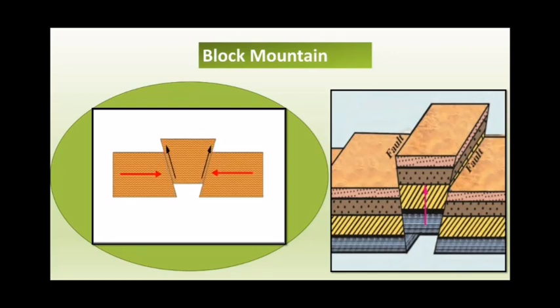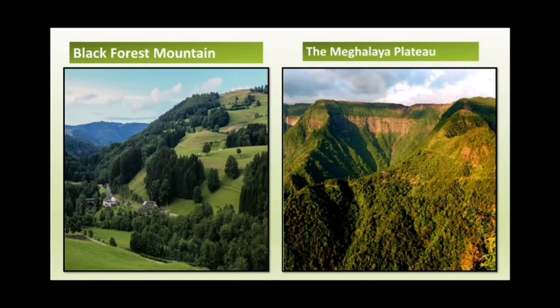Such landforms are called as block mountain. The top part of block mountains are flat. You can see this in the picture. The top part is flat and their slopes are steep. There are some examples of block mountain: the Black Forest Mountain in Europe and the Meghalaya Plateau of India.